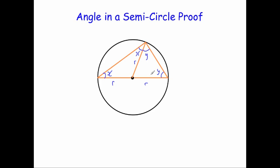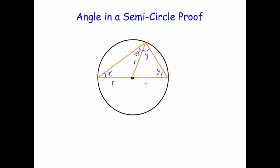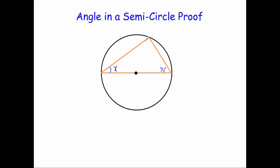If we look at the big triangle, we've got X here, we've got Y here, and at the top we've got X plus Y. I'm going to get rid of this line and just leave the big triangle. I'm going to put in my X here, my Y here, and the angle at the top, well that's X plus Y.